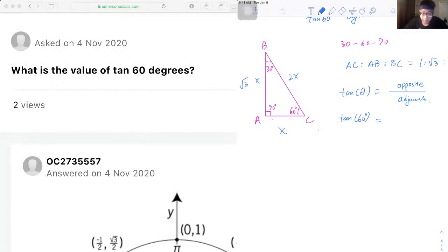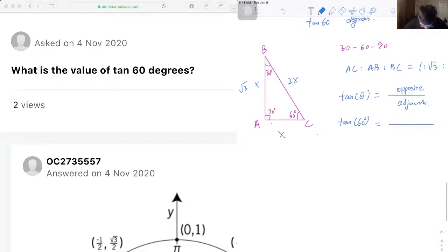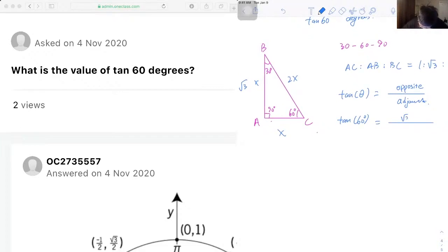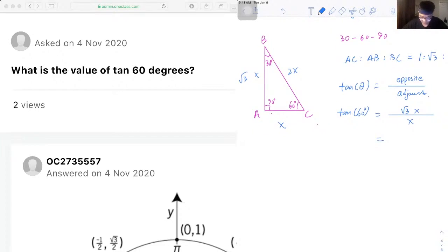So for tangent 60, it is equal to √3x over x, where x can be cancelled out, which gives us √3 for our answer.